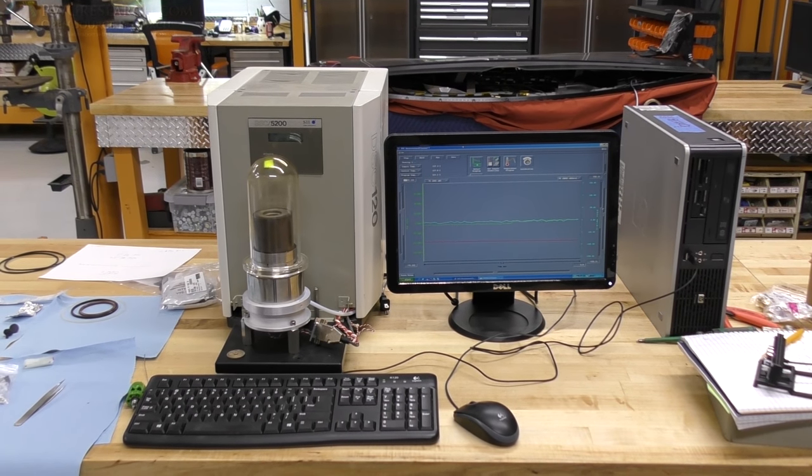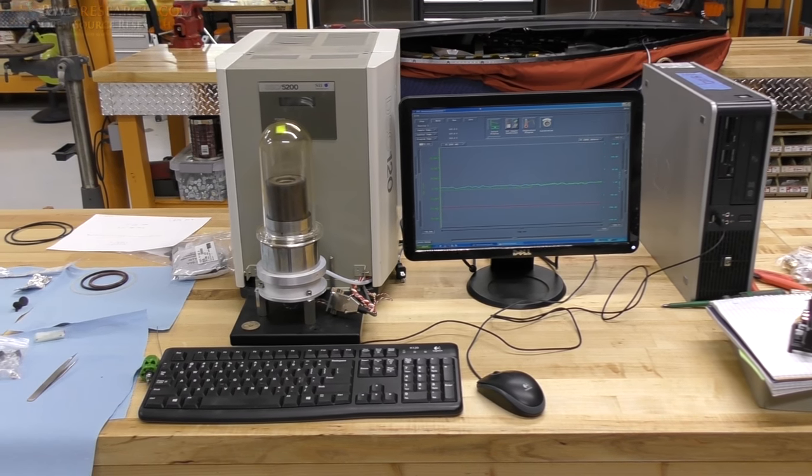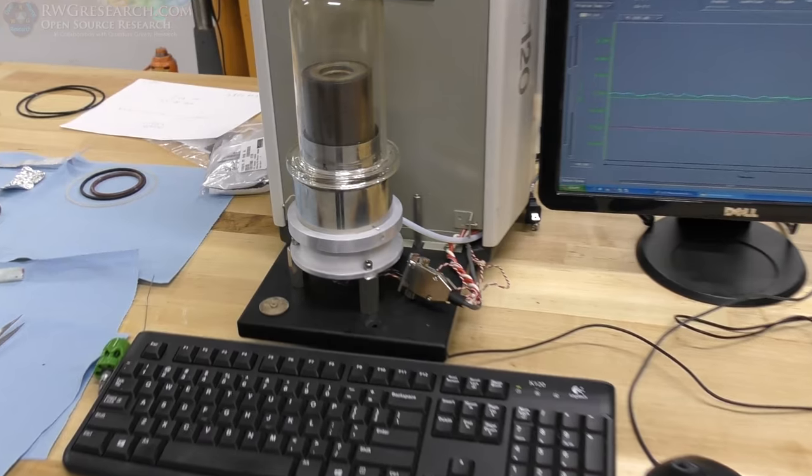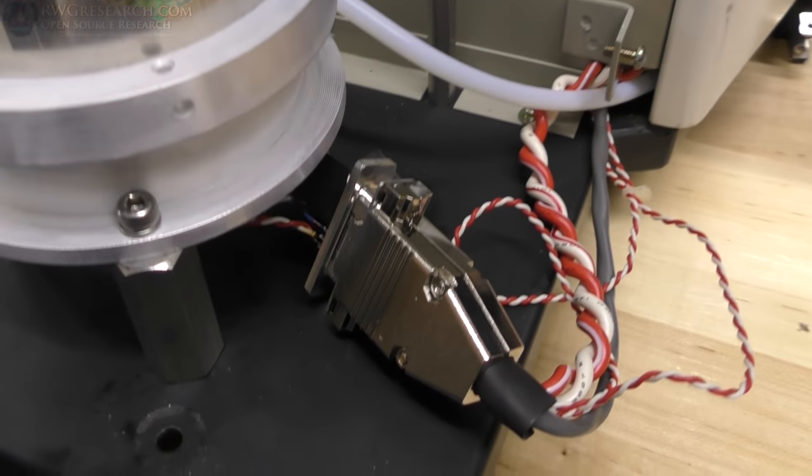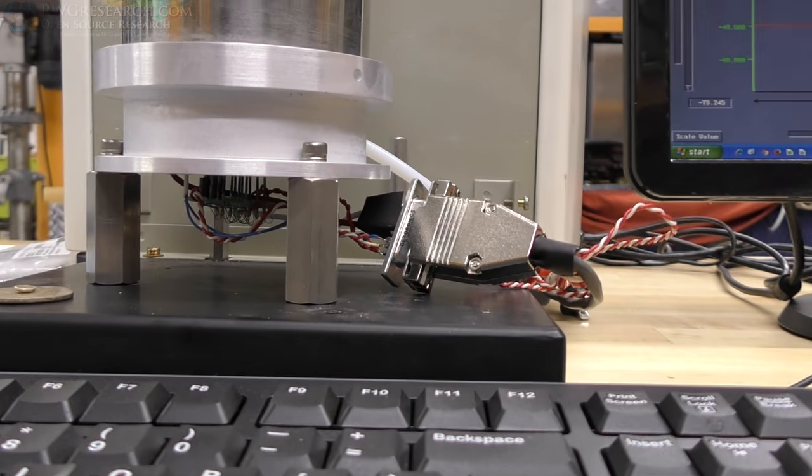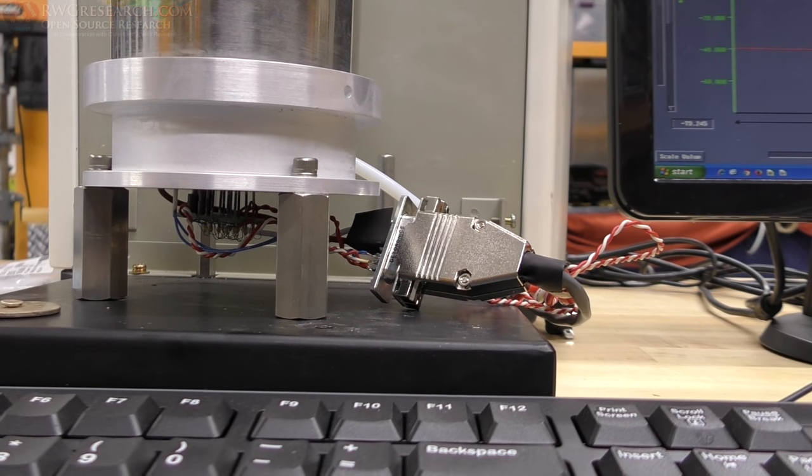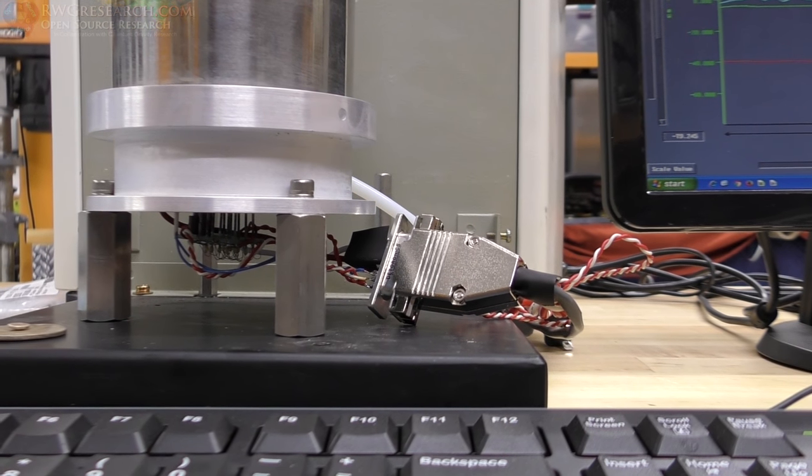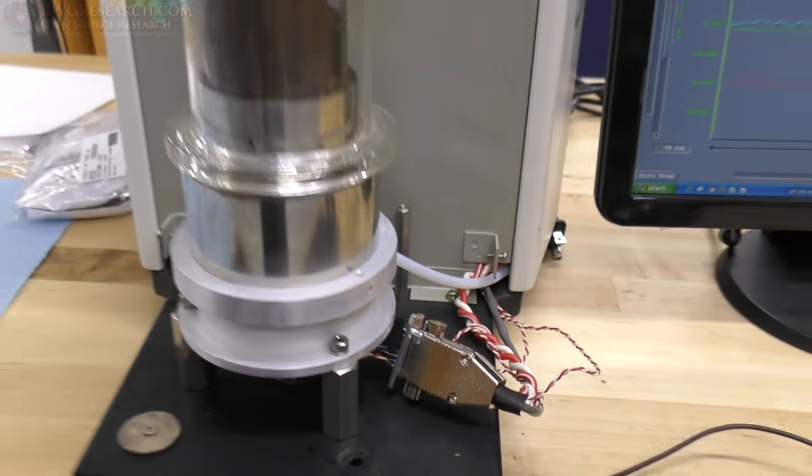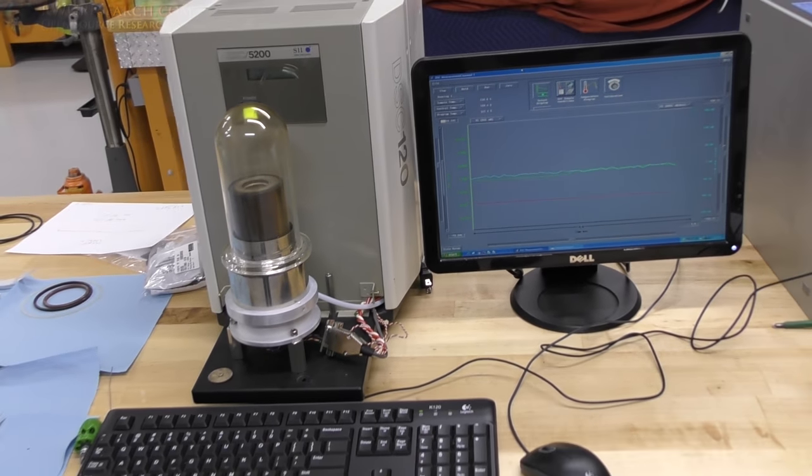All right, so here we are. We are testing this thing. So I put the base back on it, wired it all up. And what I want to do is just make sure it's at least operating correctly with this new plug, because it originally didn't have a plug on it. So there could potentially be all sorts of problems, cold junctions and all sorts of things to be worried about.